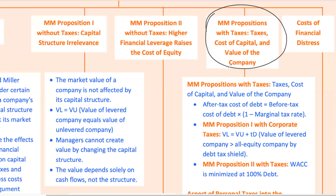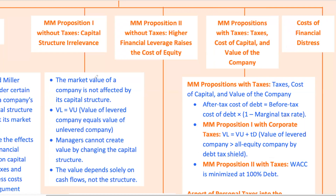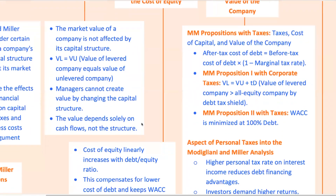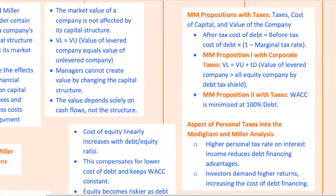When you add taxes into the equation, MM argues that the value of a company increases as it takes on more debt, because interest payments are tax-deductible. This means that in a world with taxes, debt can be advantageous, but only up to a point — beyond that, the costs of financial distress start to outweigh the benefits. Many companies in the real world, like Pfizer, have used this principle to their advantage by issuing debt to fund operations and acquisitions, benefiting from the tax shield provided by interest payments.